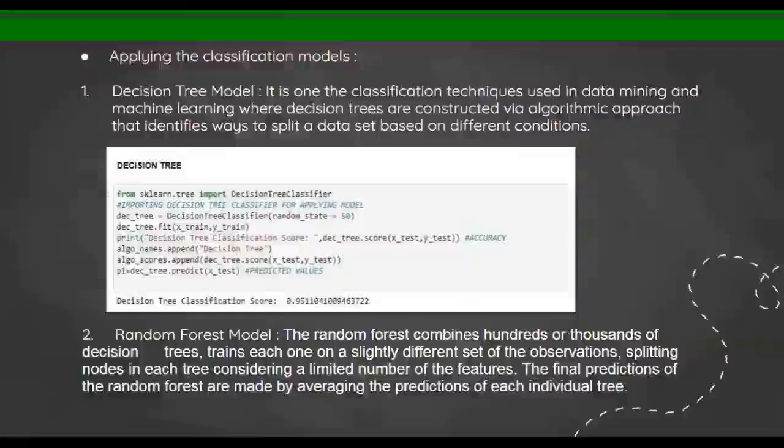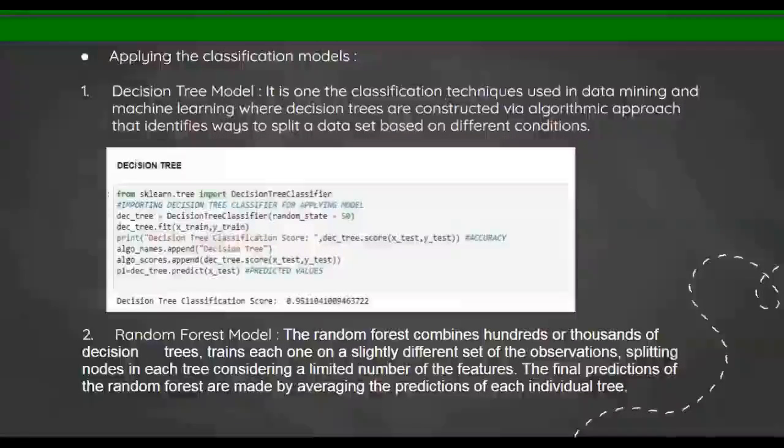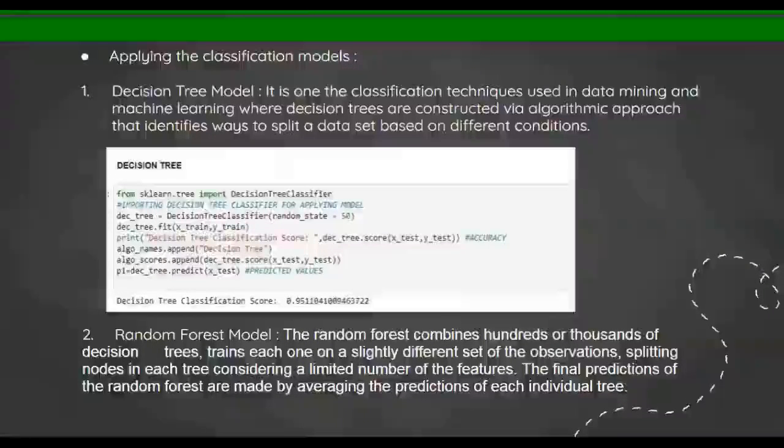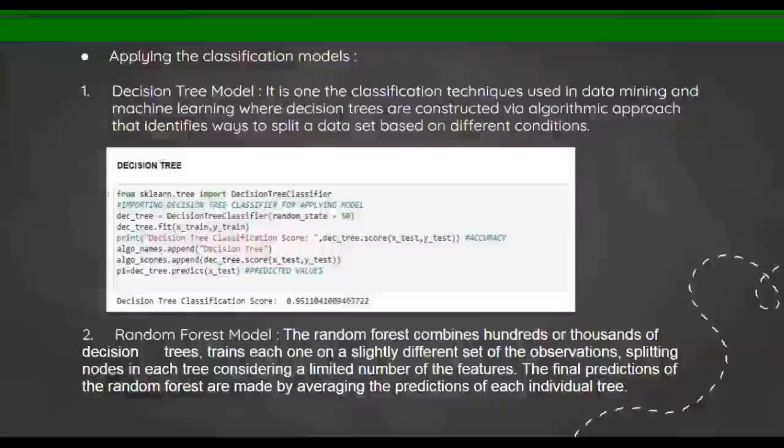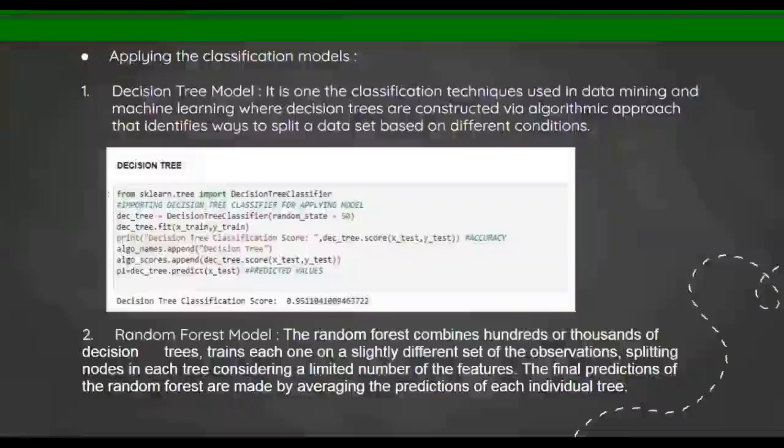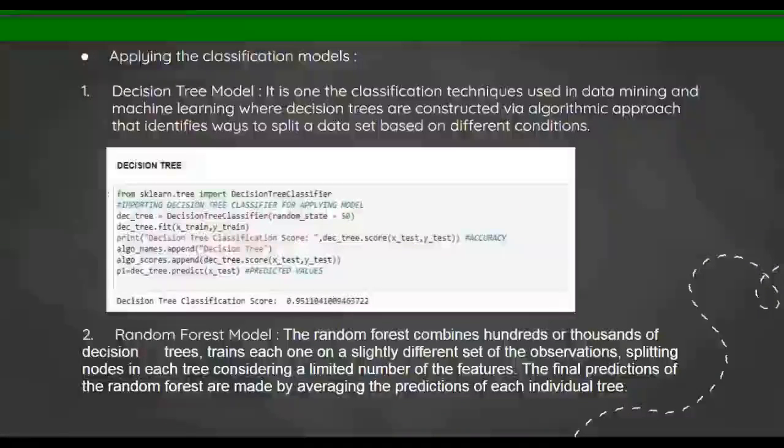The second model is random forest. The random forest combines hundreds or thousands of decision trees, trains each one on a slightly different set of observations, splitting nodes in each tree considering a limited number of features. The final predictions of the random forest are made by averaging the predictions of each individual tree. So in random forest, as we have 20 different attributes, it's applying different sets of attributes and forming different trees, then averaging the predictions of each individual tree separately and predicting the result. So random forest is a collection of many decision trees.